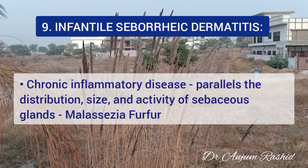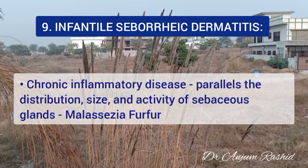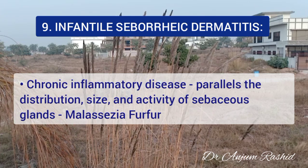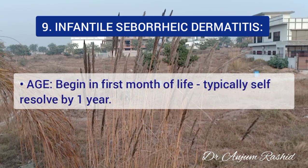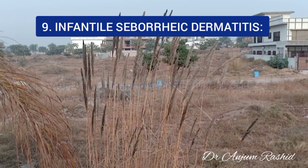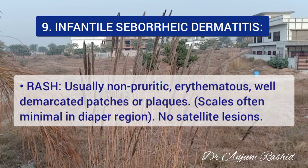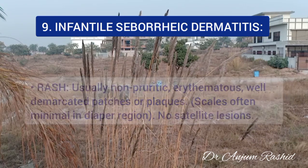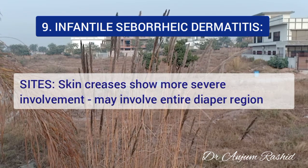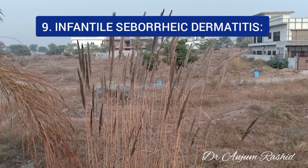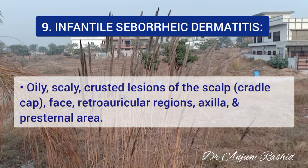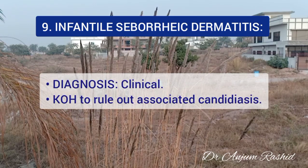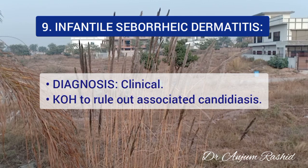The ninth differential is infantile seborrheic dermatitis. It is a chronic inflammatory disease which parallels the distribution, size, and activity of sebaceous glands. The usual causative agent is Malassezia furfur. It begins in the first month of life and typically self-resolves by one year. The rash consists of non-pruritic, erythematous, well-demarcated patches or plaques. The scales are often minimal in the diaper region and there are no satellite lesions. Skin creases show more severe involvement, but it may involve the entire diaper area. Oily, scaly, crusted lesions can be present on the scalp, face, retroauricular areas, axilla, and pre-sternal region. Diagnosis is clinical and a potassium hydroxide test should be done to rule out associated candidiasis.